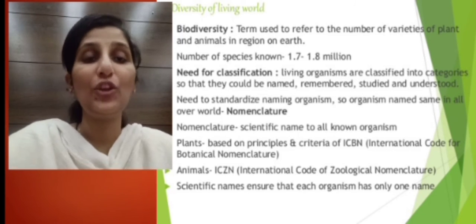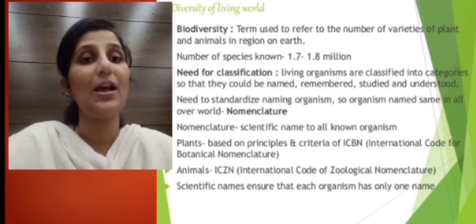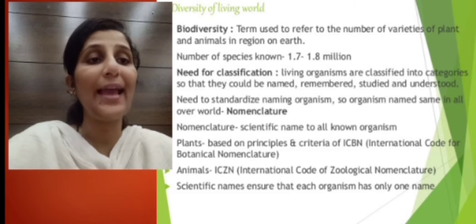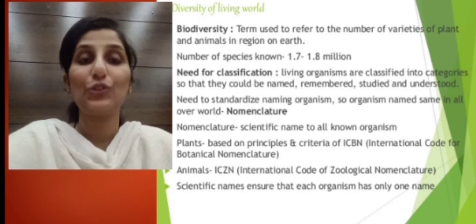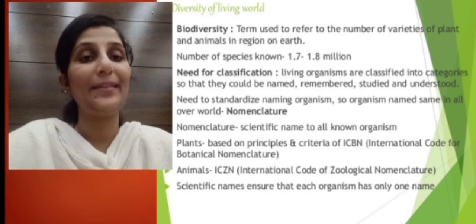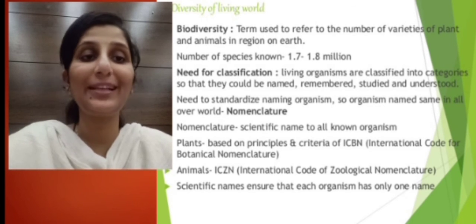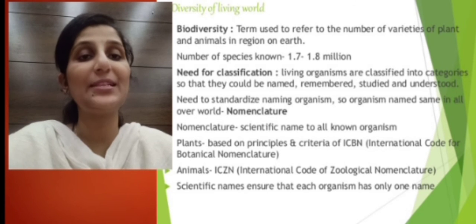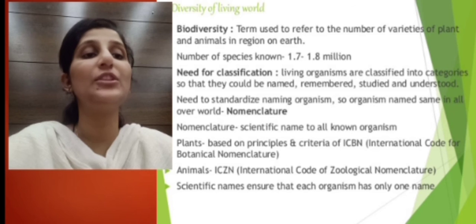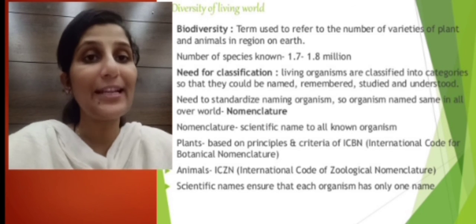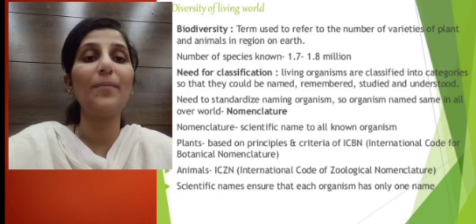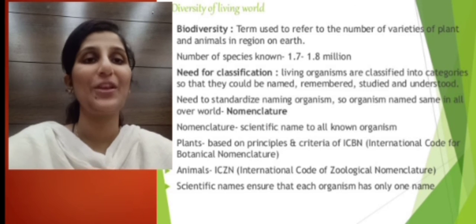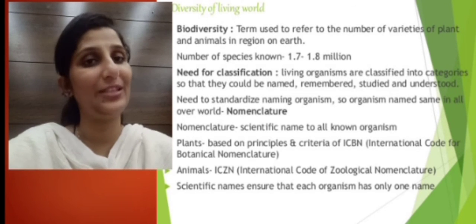The nomenclature of plants is based on principles and criteria agreed by the ICBN — the International Code for Botanical Nomenclature. The nomenclature for animals is done by the ICZN — International Code of Zoological Nomenclature. The scientific name or nomenclature ensures that an organism has only one name, so that it is called by the same name all over the world. That is the importance of nomenclature and the need for classification.